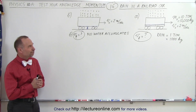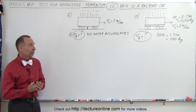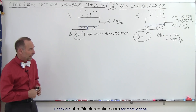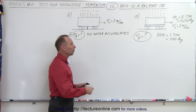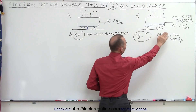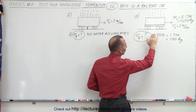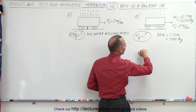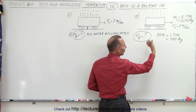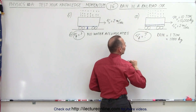Welcome to our lecture online. Here we have an interesting problem we're going to do in two ways. In Part A, we have a railroad car traveling to the right at two meters per second, rolling on a frictionless track so it's not gaining any speed, not slowing down — simply rolling at a constant speed.